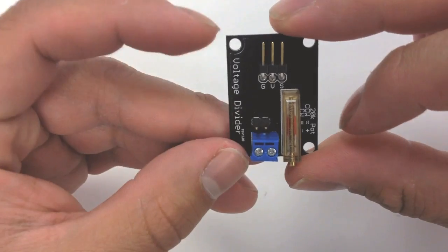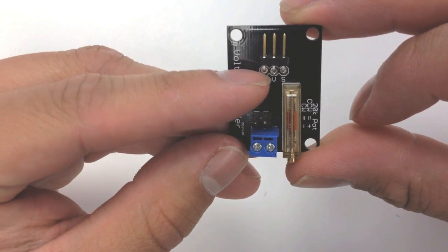We've also got this three pin header here that has ground and voltage that you'll feed from your Arduino to the board and then signal that you'll feed from the board to your analog input on your Arduino.